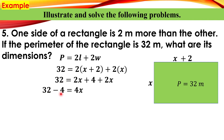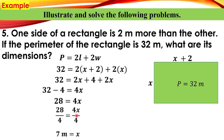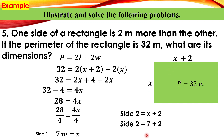So 32 minus 4 gives us 28, which equals 4x, where 4x came from 2x plus 2x. Since the coefficient of x is 4, we divide both sides by 4: 28 divided by 4 is 7, and 4x divided by 4 is x. So x equals 7 meters for side one. For side two: x plus 2 equals 7 plus 2 equals 9. Therefore the dimensions are 7 meters and 9 meters.